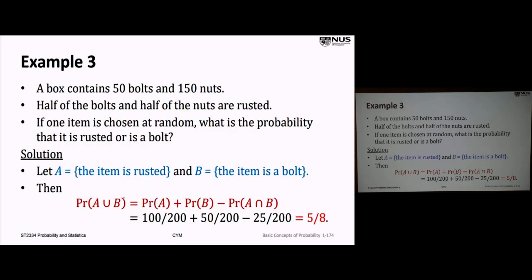For any pair of events A and B, we have: probability of A union B equals the probability of A plus the probability of B minus the probability of their intersection. There are 200 nuts and bolts in total (50 plus 150). The total number of rusted items is half the bolts and half the nuts, which is 100. So the probability that an item is rusted is 100 over 200, or one over two.